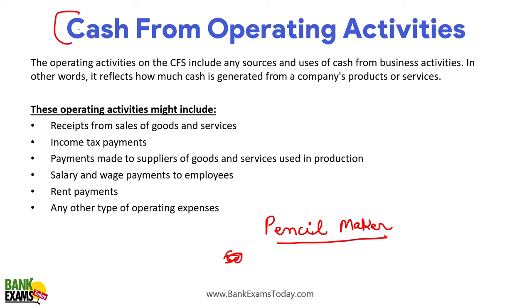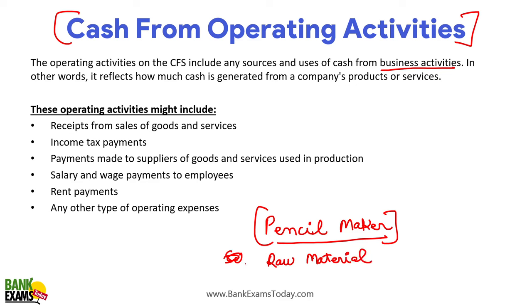Now, what is cash from operating activities? The operating activities on the cash flow statement include any source and use of cash from business activities. Business activities are the day-to-day activities of a business. For your pencil manufacturing, you are buying raw material — wood, graphite, and paint — and paying for inbound logistics, electricity, labor, and admin. All these are operating activities.